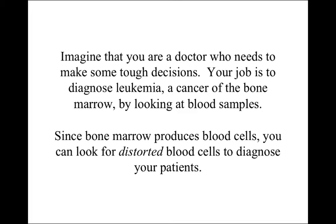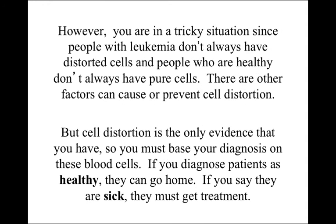Imagine that you're a doctor who needs to make some tough decisions. Your job is to diagnose leukemia, a cancer of the bone marrow, by looking at blood samples. Since bone marrow produces blood cells, you can look for distorted blood cells to diagnose your patients. However, you're in a tricky situation because people with leukemia don't always have distorted cells, and people who are healthy don't always have pure cells. There are other factors that can cause or prevent cell distortion, but cell distortion is the only evidence that you have. If you diagnose patients as healthy, they can go home; if you say they are sick, they must get treatment.